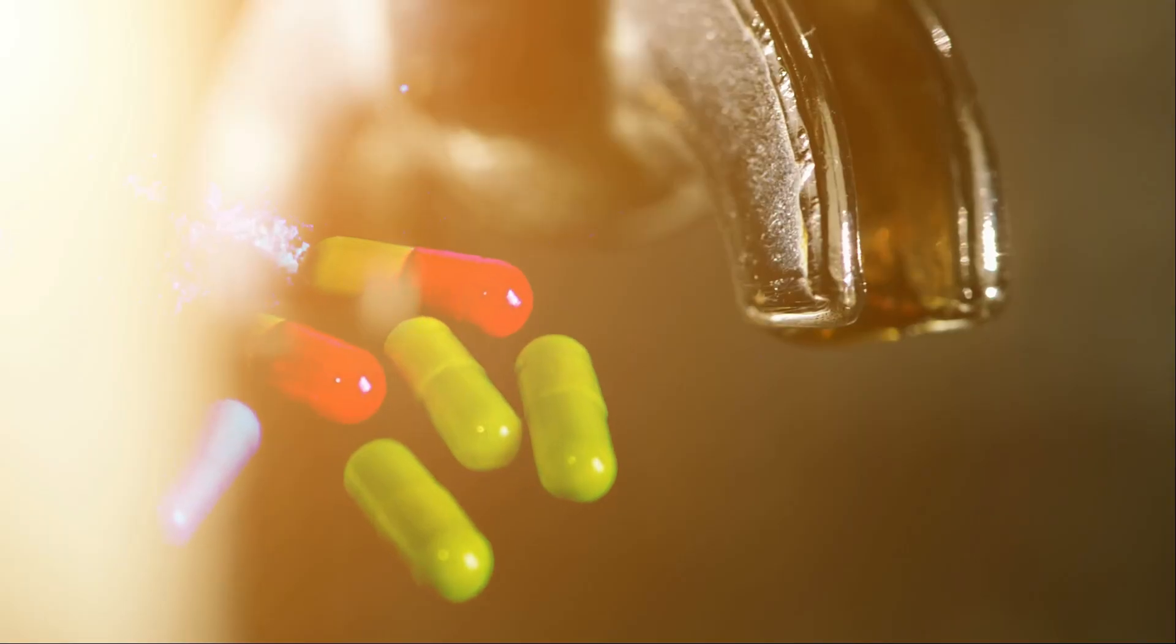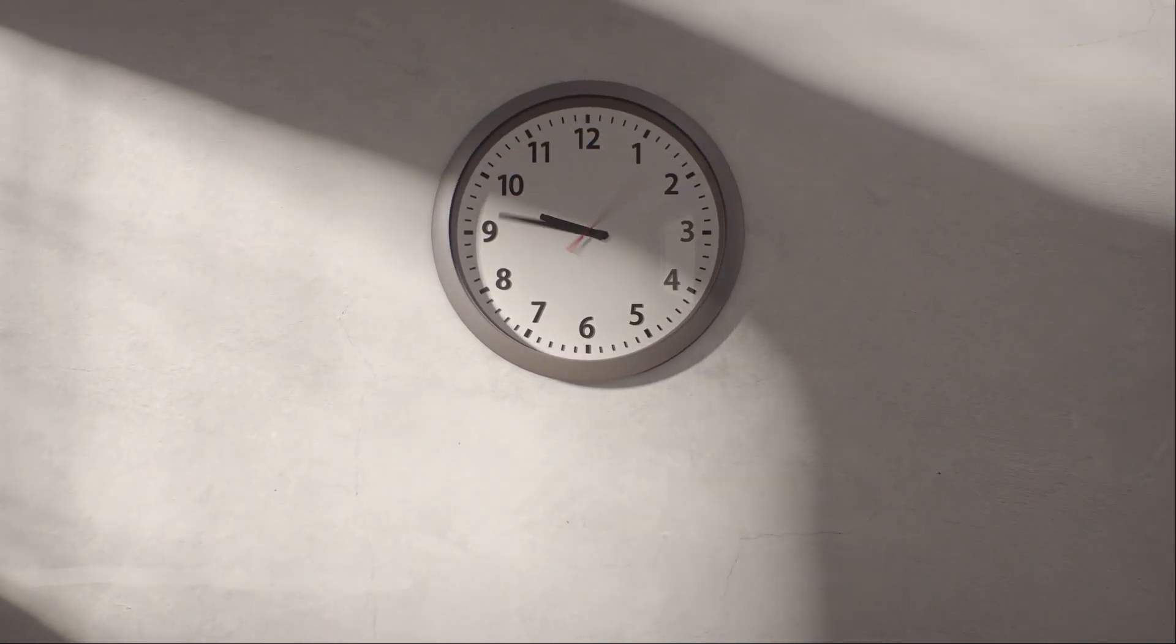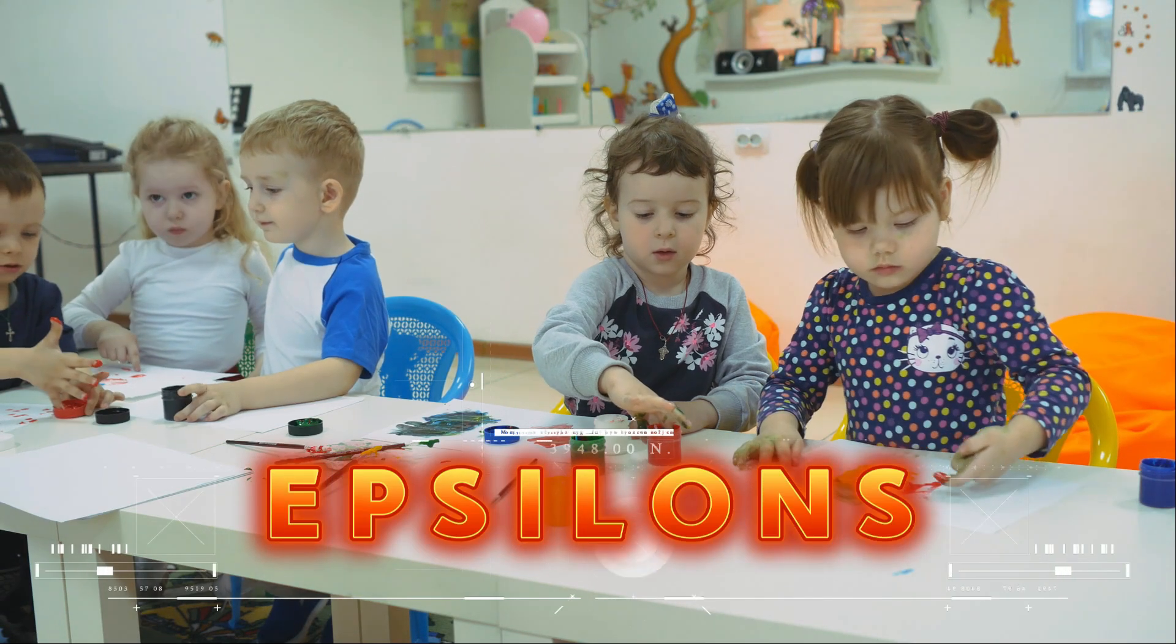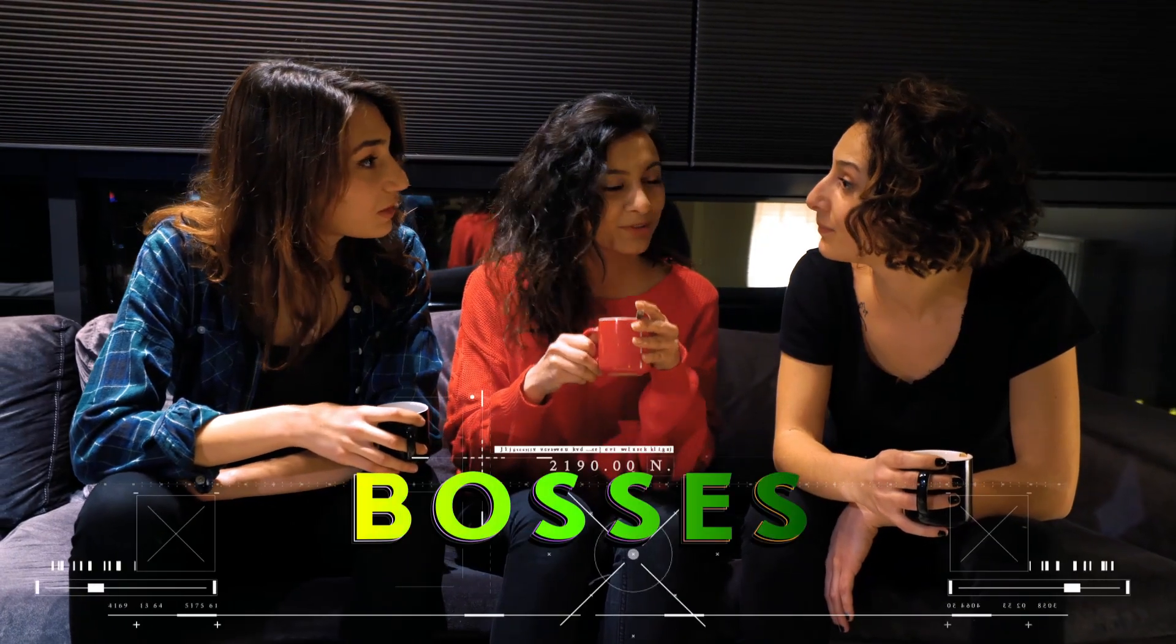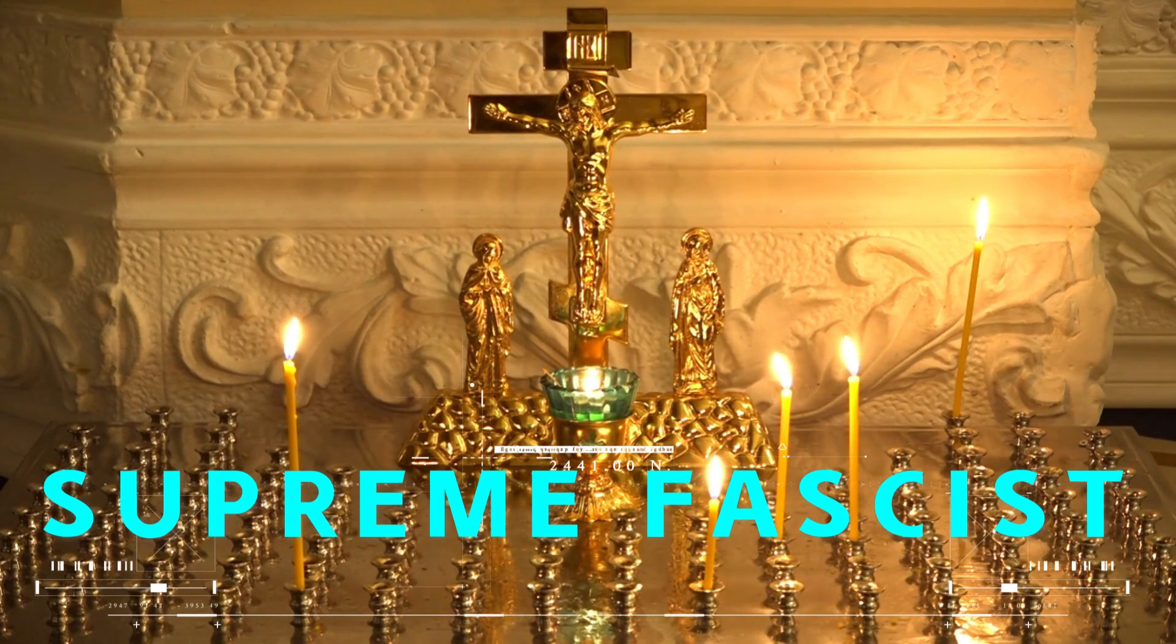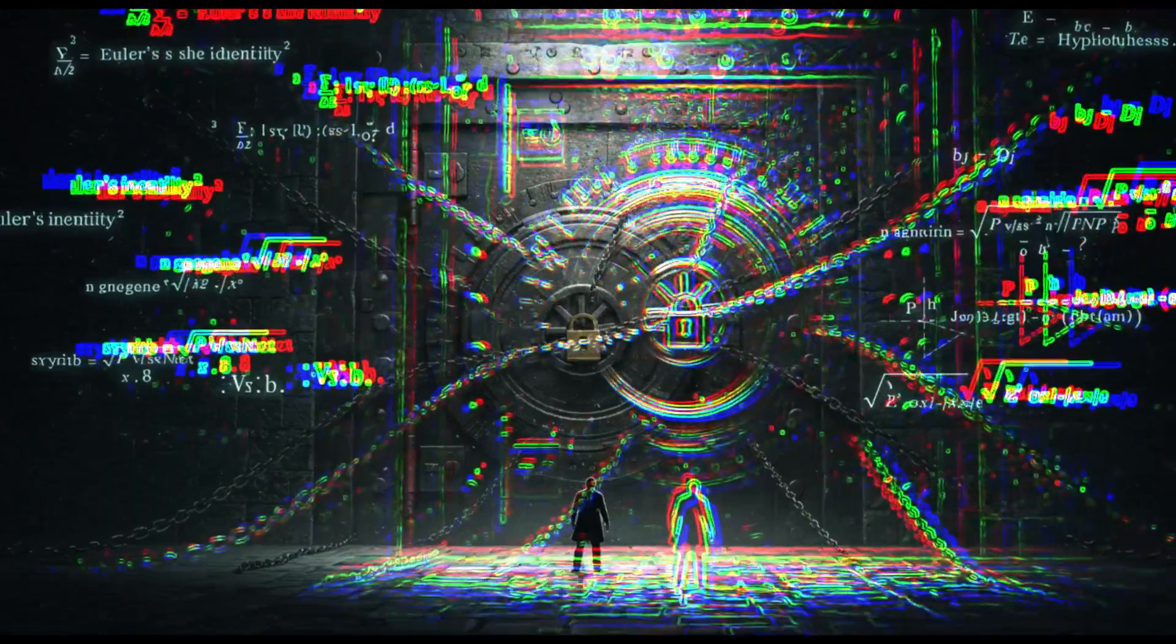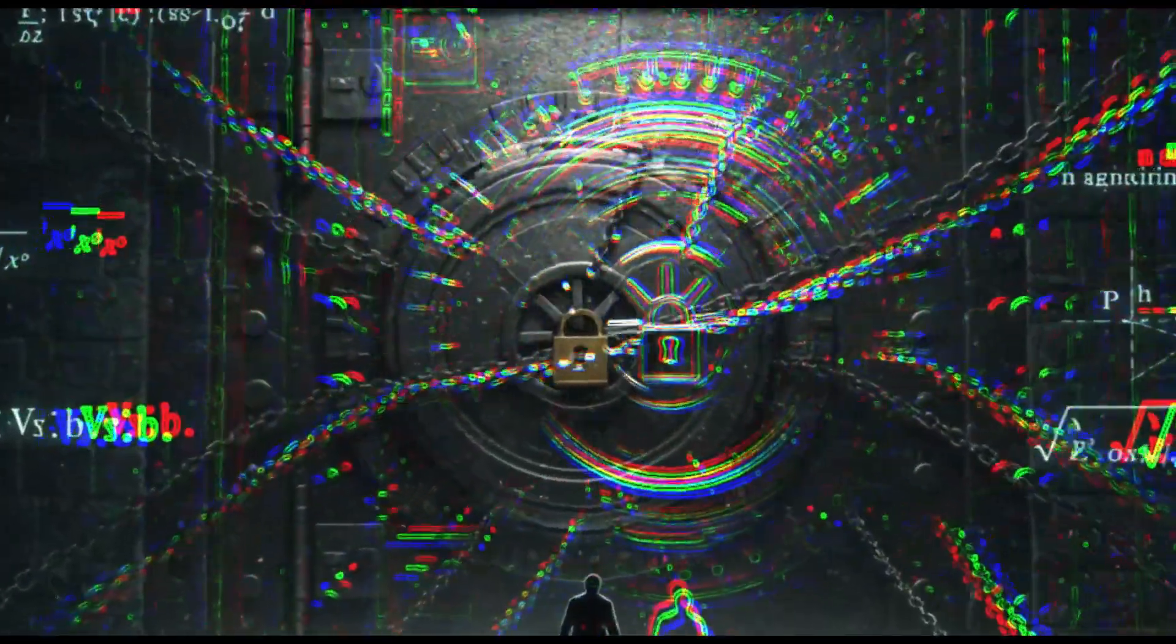But working with Erdos came with a price. He didn't believe in sleep, it was just wasted time. Fueled by coffee and amphetamines, he would work for 20 hours straight, solving equations at a speed few could keep up with. He had his own quirky language too. Children were epsilons. Money was dead fish. And women? He called them bosses. And as for God? Erdos wasn't a believer. He jokingly referred to God as the Supreme Fascist, the one who made life unfair by keeping the best mathematical proofs locked away, only revealing them to the lucky few.